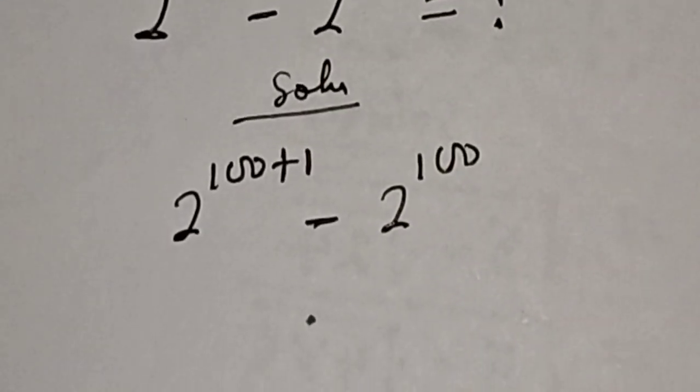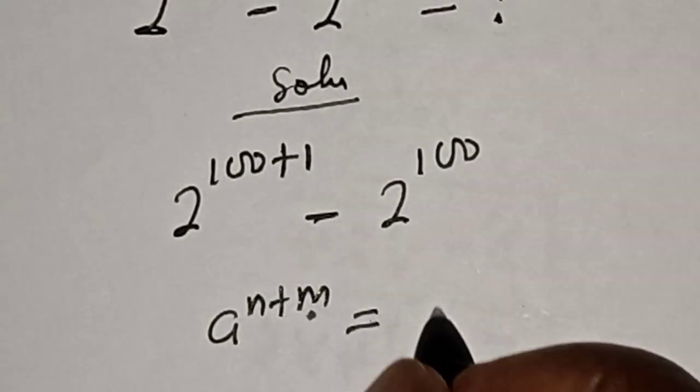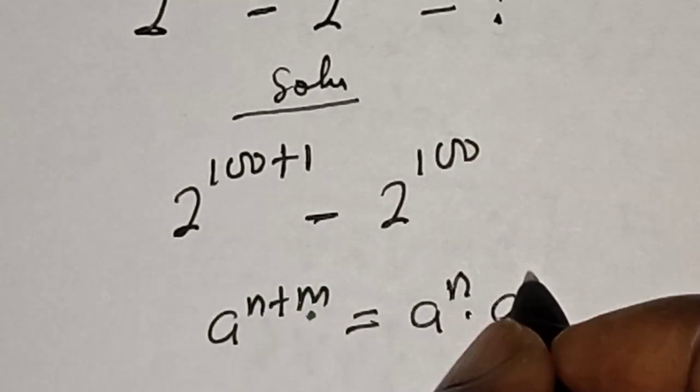Take note of this rule that if you have a raised to power n plus m, this is equal to a raised to power n multiplied by a raised to power m.